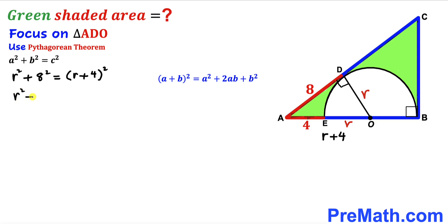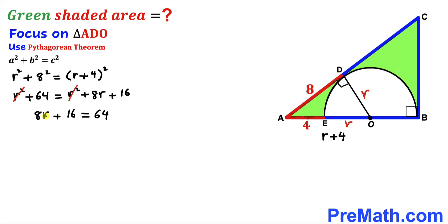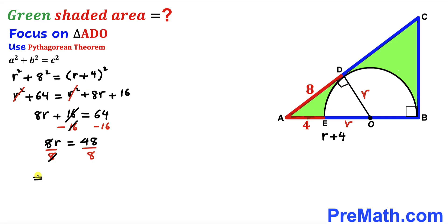Expanding gives: r² + 64 = r² + 8r + 16. The r² terms cancel, leaving 8r + 16 = 64. Subtracting 16 from both sides gives 8r = 48. Dividing both sides by 8, our radius r turns out to be 6 units.